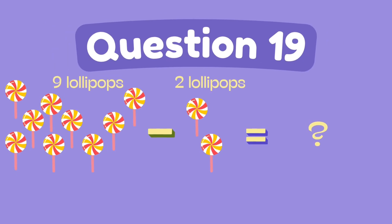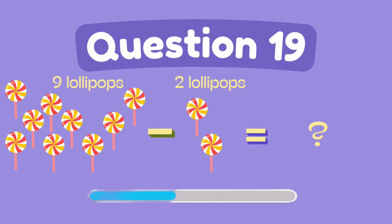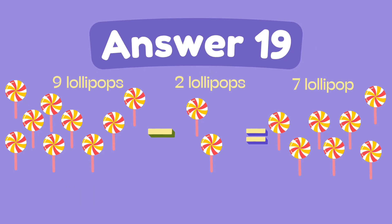What is nine minus two? The answer is seven.